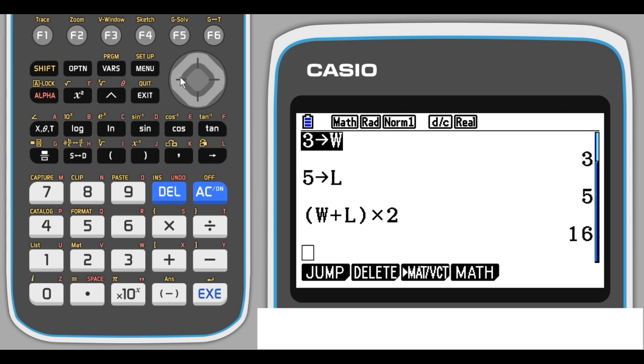So again, using the cursor button, just scroll left until you get to the 3. Press delete, and then change to 15, and press EXE. We've automatically recalculated the perimeter. It's now 40.